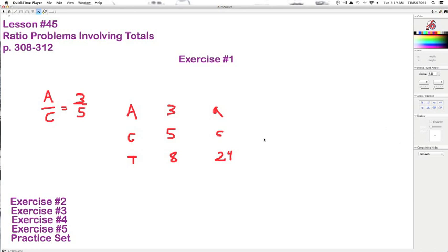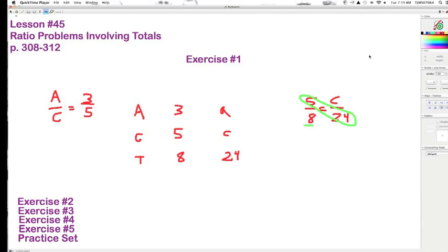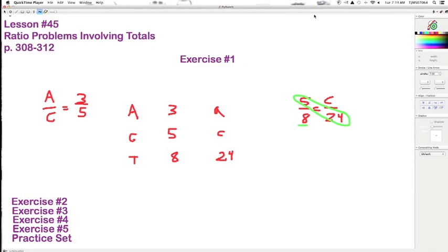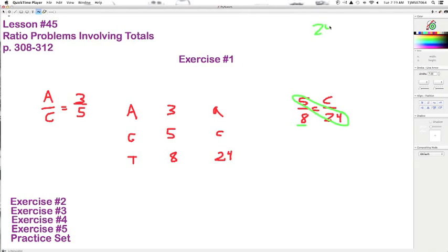So we can just say this: five to eight, if we want to find out clowns, is the same as C over 24. Then we do what we did before. We multiply the loop and divide by what's left. So 24 times 5, 120 divided by 8, equals 15.